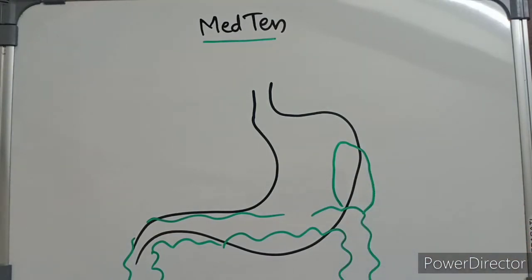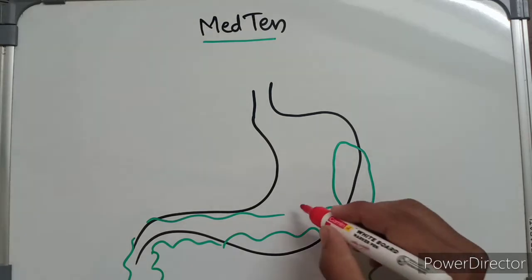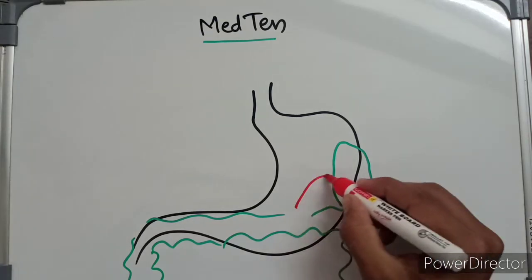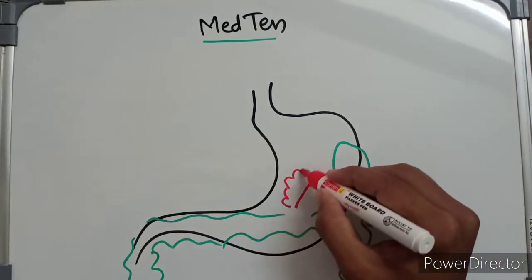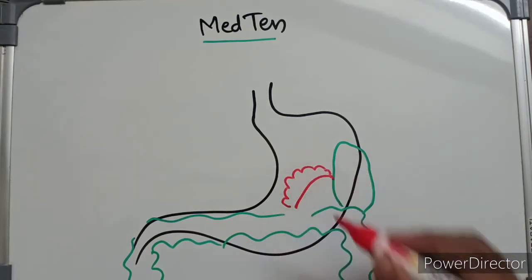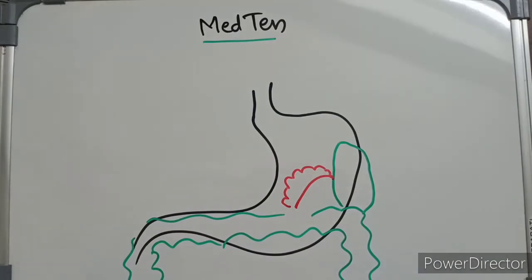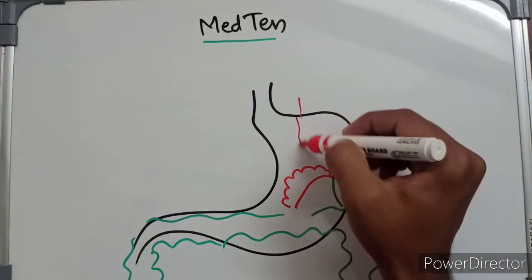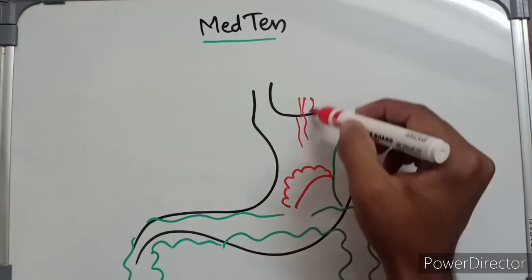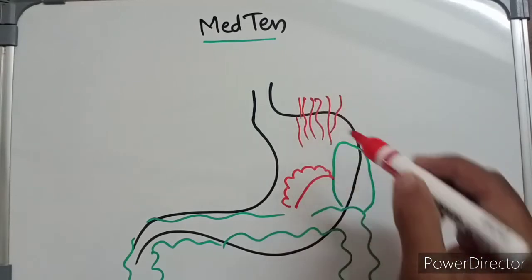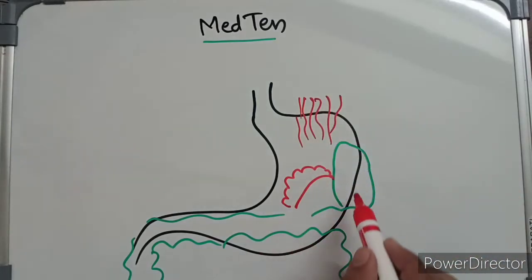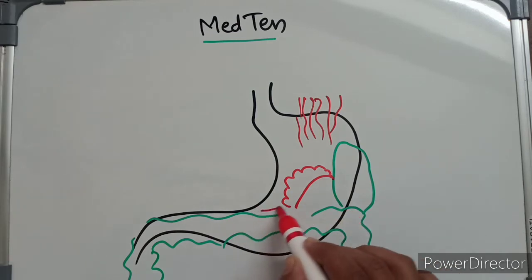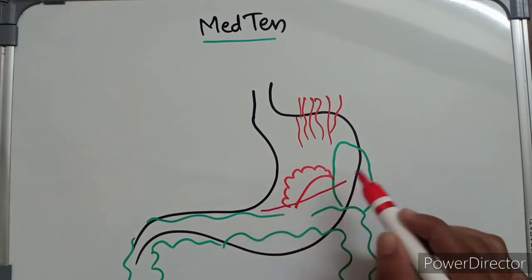The next organ will be the kidney and suprarenal gland. Kidney will lie over here and suprarenal gland here. And then diaphragm will also form part of the stomach bed; diaphragm will lie over here.